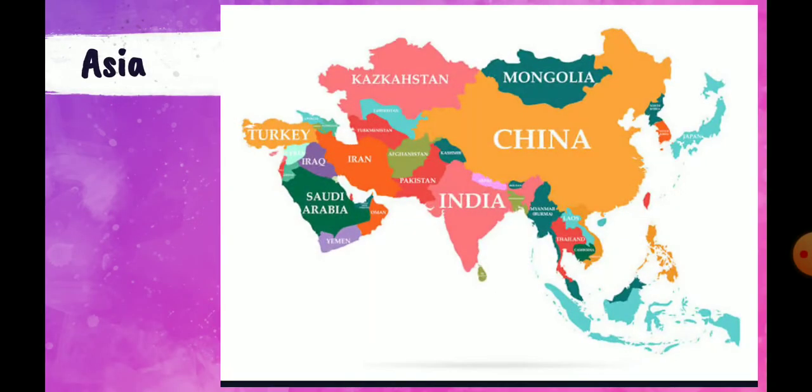This is the map of Asia with the names of different countries. Here you can see the names of different countries — we are having Turkey, Iraq, Saudi Arabia, Iran, Pakistan, India, China, Mongolia, and Kazakhstan. Many students get confused whether Saudi Arabia is a part of Asia or Africa. Saudi Arabia is a part of Asia — its location comes under Asia.